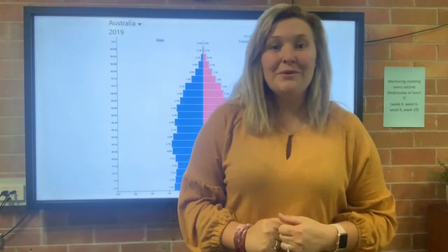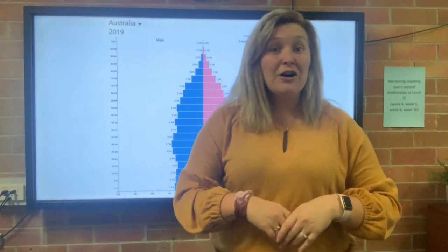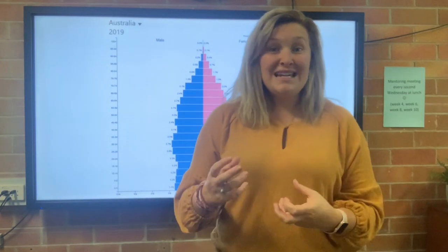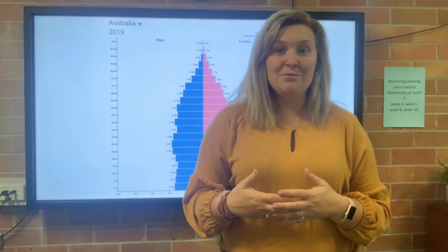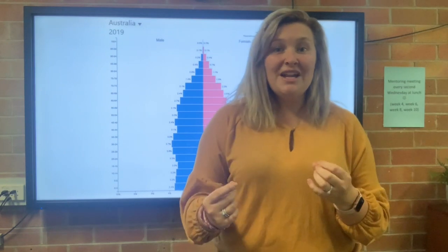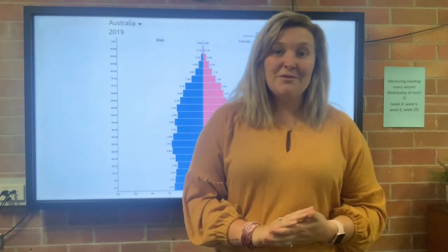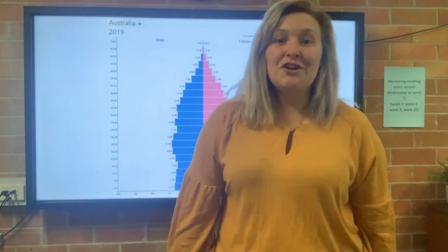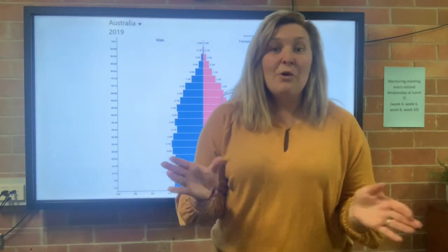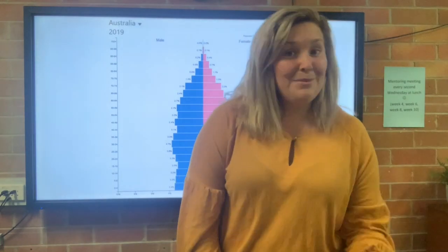A really interesting thing we can do with population pyramids is look at how certain events — conflict, famine, disease — can impact on a population pyramid. If it's been a really critical event, you can actually see that event in the shape of the population pyramid. So I'm going to hand over to Cisio and he's going to show you how we look at different dips and what that tells us about a population, with a couple of examples.